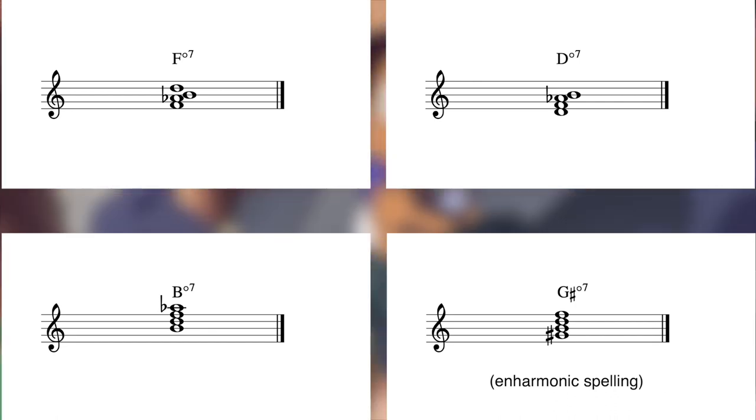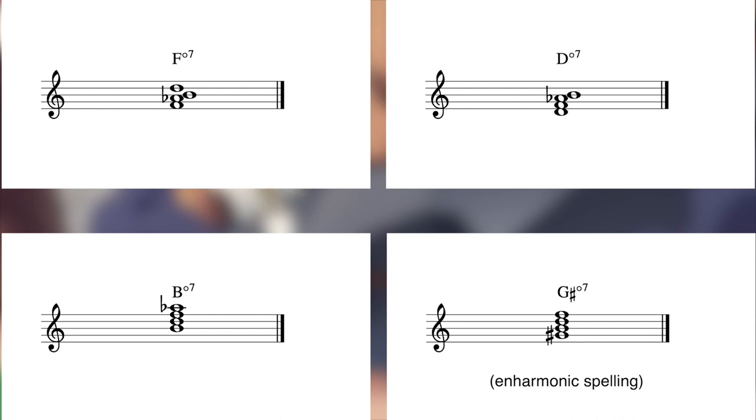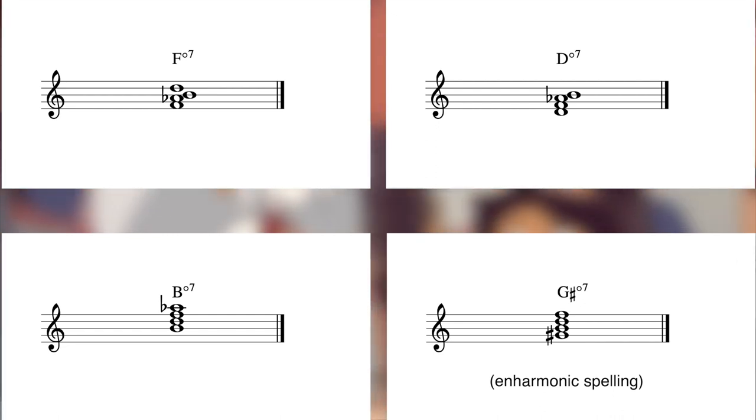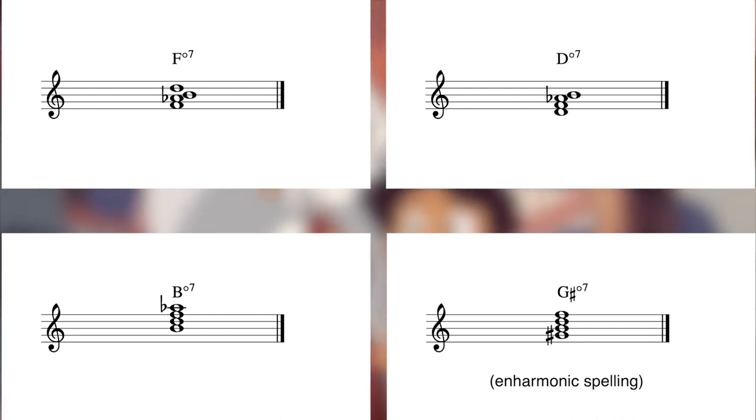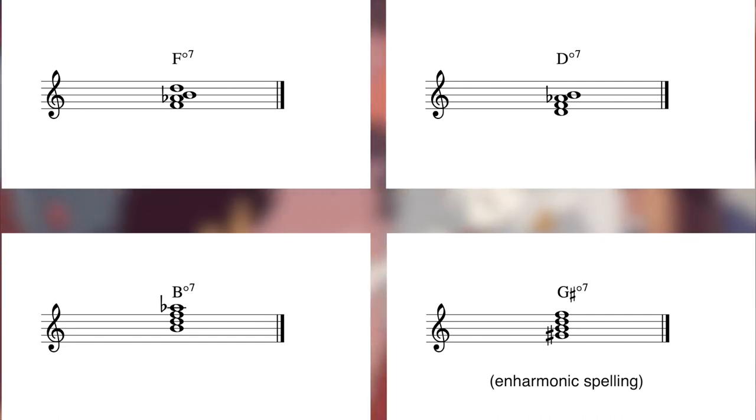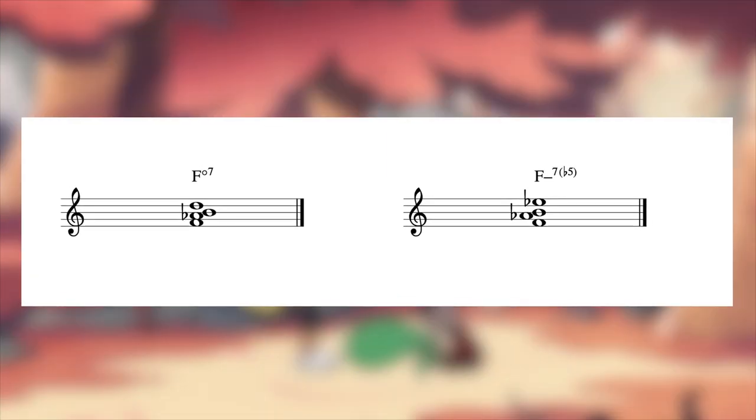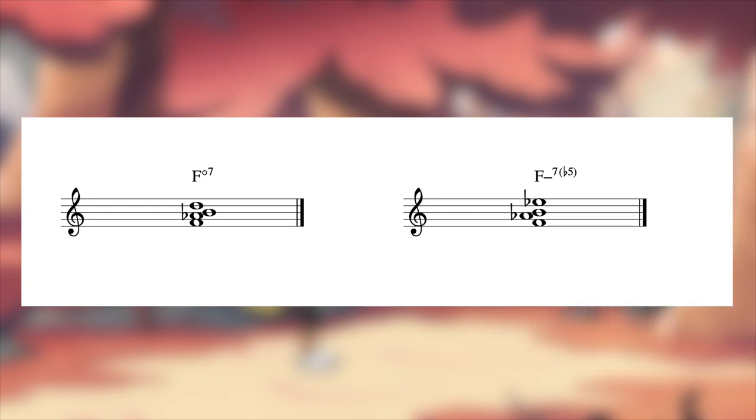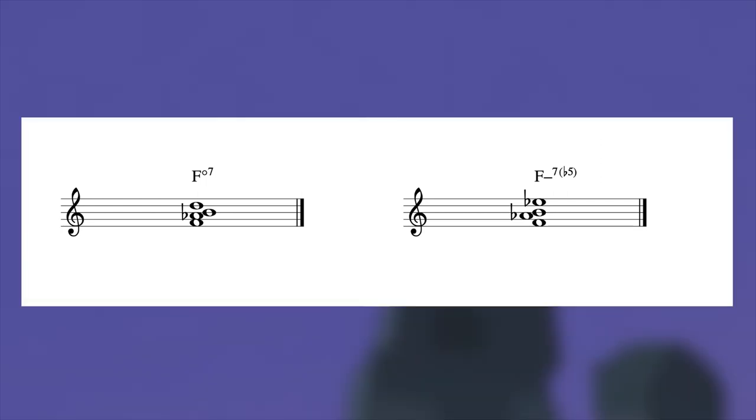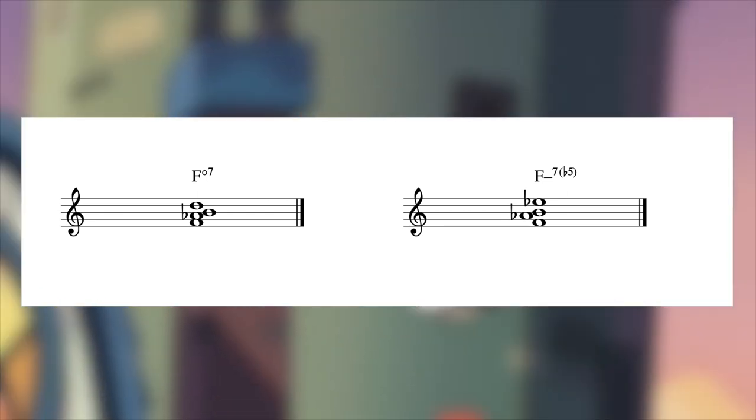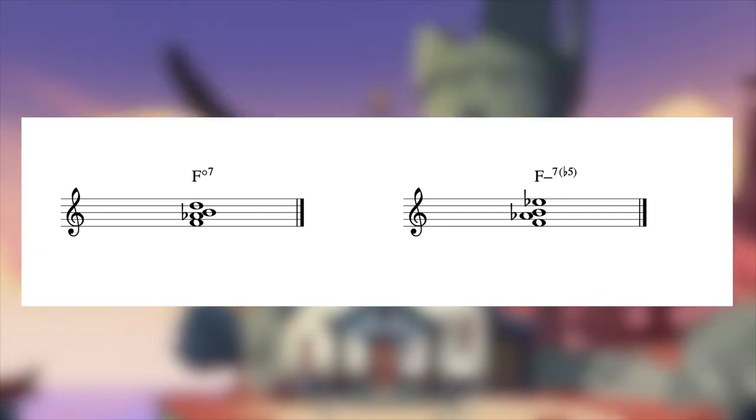I mentioned earlier that fully diminished 7 chords aren't naturally found in the major or natural minor scale. However, the similar half diminished or minor 7b5 chord is. Comparing this F diminished 7 to the F minor 7b5 which is diatonic to F sharp major, we can see that the only difference is the top note, which is raised by a half step. So then surely, this chord functions as a diminished alteration of F sharp major's F minor 7b5, right?